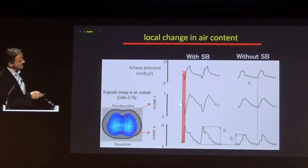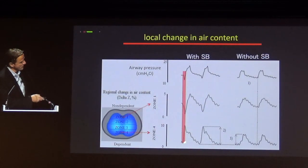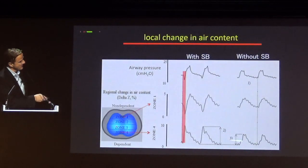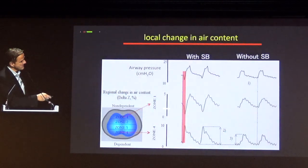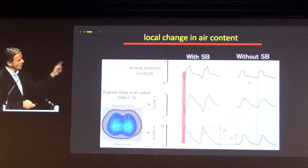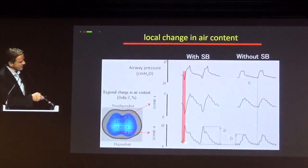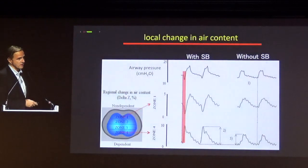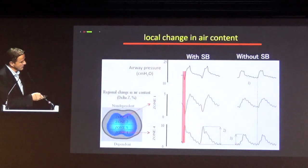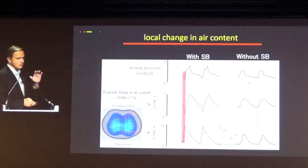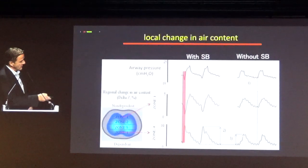We proved using EIT that at the beginning of inspiration in the non-dependent zone you have deflation of the lung while there is a big push of the diaphragm in the dependent zone. When the patient is paralyzed, the stretch in the dependent lung zones is much smaller. The global tidal volume in assisted and controlled mechanical ventilation is exactly the same — both situations receiving 6 mL/kg. After seeing this amount of stretch, we decided to reproduce the same stretch during completely controlled mechanical ventilation. We paralyzed the patient, stretch was very low, then we increased tidal volume until we saw the same stretch in the lower lung zones.